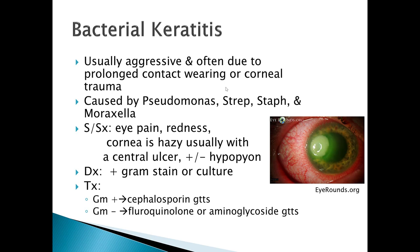Now we're going to talk about keratitis. There are many different types: bacterial keratitis, viral keratitis, protozoan keratitis, exposure keratitis, and environmental keratitis. Keratitis is a generic term for inflammation of the cornea. Bacterial keratitis is an infection of the cornea due to a bacterial causative agent. It's usually aggressive and often due to prolonged contact lens wearing or corneal trauma, and is often caused by Pseudomonas specifically in contact lens wearers.